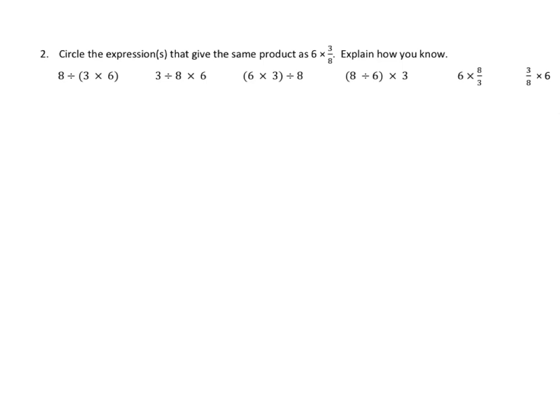Okay, we're going to skip right over to number 2 here. Number 2 tells us to circle the expressions that give the same product as 6 times 3 eighths. Explain how you know. The easiest thing to do is to begin with the initial expression, and that is 6 times 3 eighths.